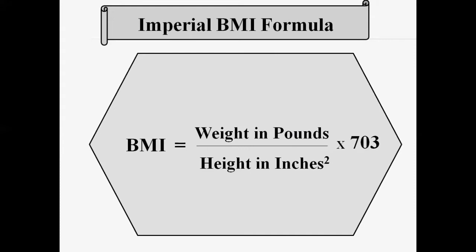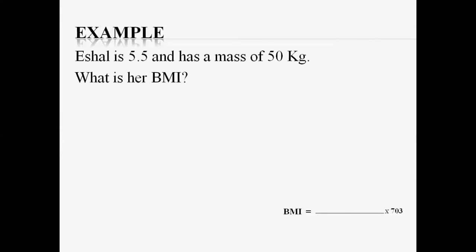Let's calculate the BMI through an example. Here is an example which shows that Ishaal is 5 feet 5 inches and has a mass of 50 kg. What is her BMI? For BMI, you need two things: the height of a person and the weight of a person. These two measurements are required before measuring the BMI.